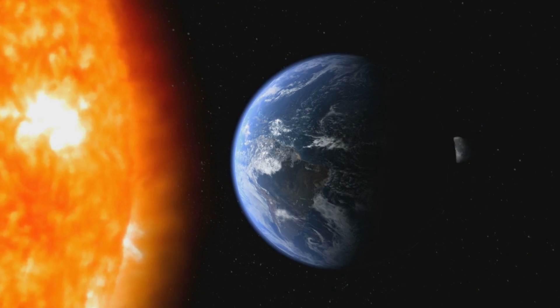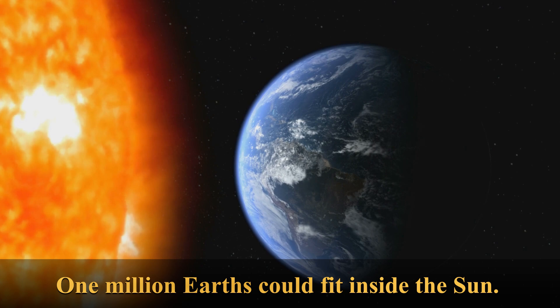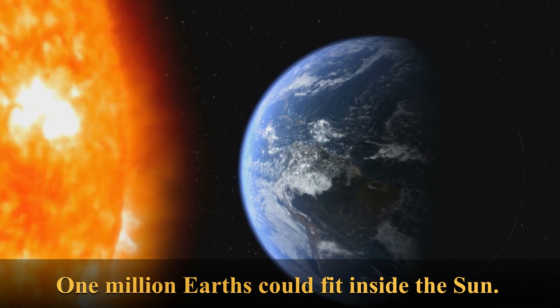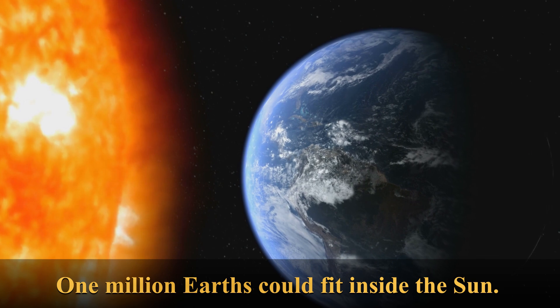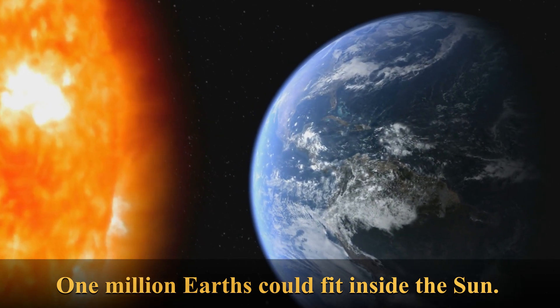One million Earths could fit inside the Sun. A hollow Sun would fit around 960,000 spherical Earths. If squished inside with no wasted space, then around 1,300,000 would fit inside.